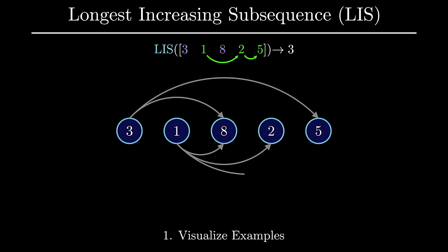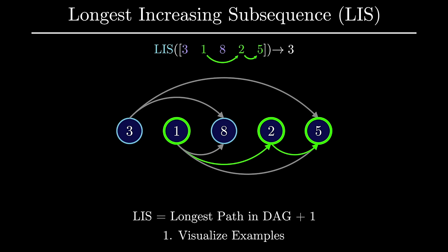Here's what the directed acyclic graph representation looks like for this particular input sequence. What's nice about this representation is that an increasing subsequence is just a path in the graph. Going one step deeper, the length of the longest increasing subsequence corresponds to the length of the longest path in this directed acyclic graph plus one, since we are counting nodes. Sometimes, this shift in perspective is the key to making challenging problems more approachable.